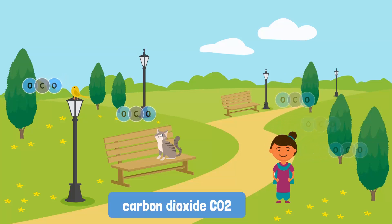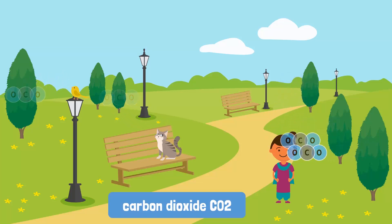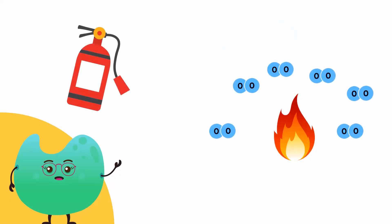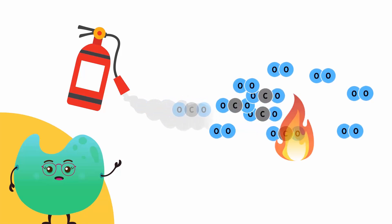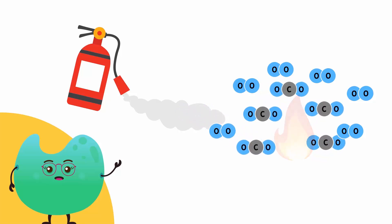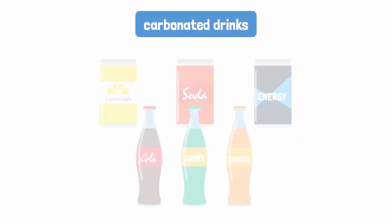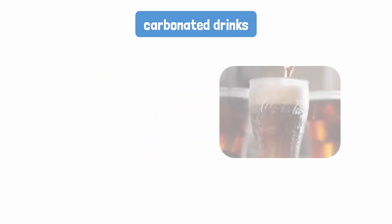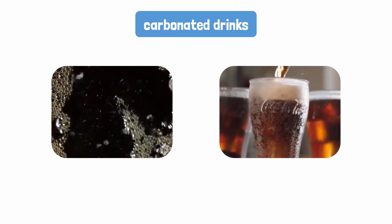Apart from cooking, let us consider some other uses of compounds. The compound carbon dioxide, CO2, is a gas that is exhaled by humans and animals. It is also used by plants to produce oxygen and food for themselves and for humans and animals. Carbon dioxide is heavier than air, so it displaces oxygen. Therefore, it is filled in fire extinguishers to put out fire.